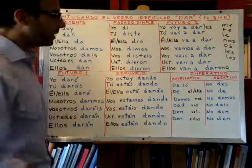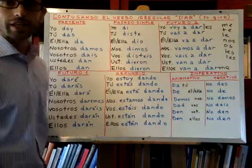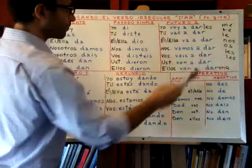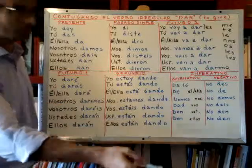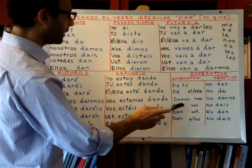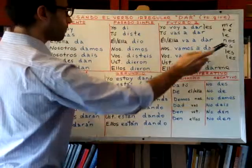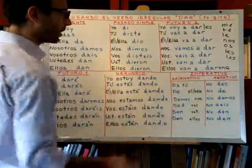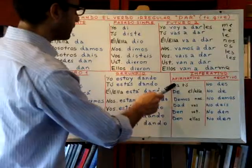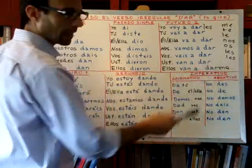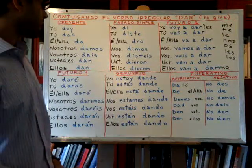Give him — or give her — would be dale. Give us is danos. Give yourselves would be daos. And give them would be dales. So that's in the affirmative.